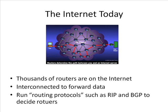So how does the internet today look? Basically this could be you, and here is your friend with whom you are sharing information. The data is going through the internet through a web of hundreds and thousands of routers. Using various routing protocols, the exact path your packet takes to the final destination is decided. There are thousands of routers on the internet today interconnected to facilitate data forwarding, running protocols such as RIP (Route Information Protocol), BGP (Border Gateway Protocol), and many others. A discussion of these protocols is beyond the scope of this tutorial.